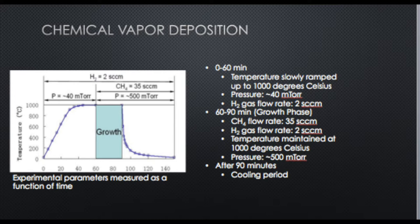It's important to maintain the temperature at 1000 degrees Celsius to provide the heat necessary for the reaction. From 60 to 90 minutes is the growth phase, where graphene is actually deposited onto the copper foil, lasting about 30 minutes. After 90 minutes, graphene is done growing, and the reaction can be cooled down so the resulting graphene film can be studied.